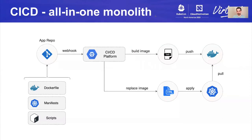I drew a diagram here of how CI/CD looks in general. You have your app repo where your source code is. In there you also have a Dockerfile, Kubernetes manifests, and scripts that define how your CI/CD process goes. You push a change to your app repo that creates a container image, then your script will place the new image tag inside the Kubernetes manifests and apply those manifests on the cluster. This is how you release a new version of the app.